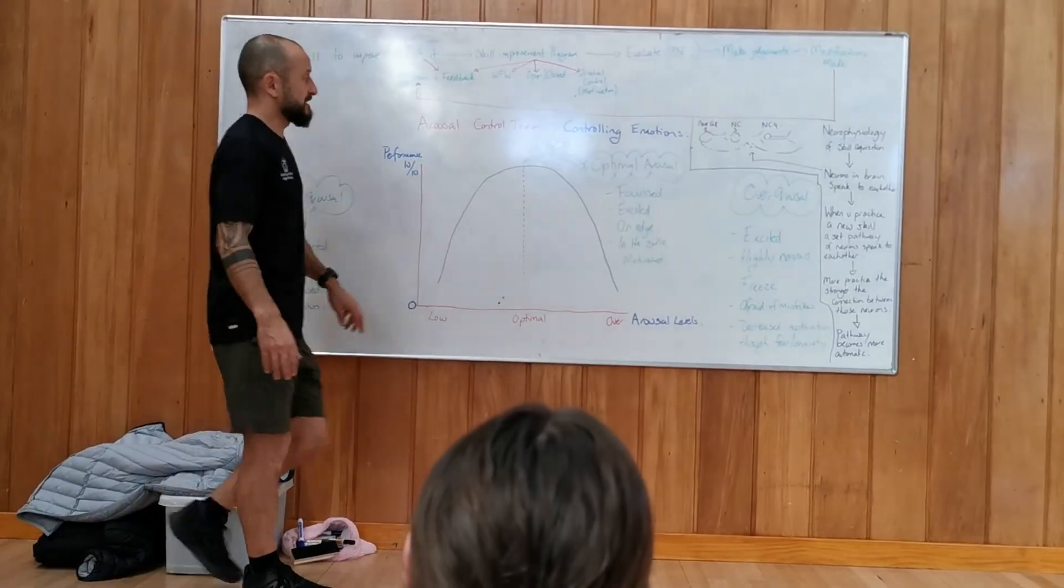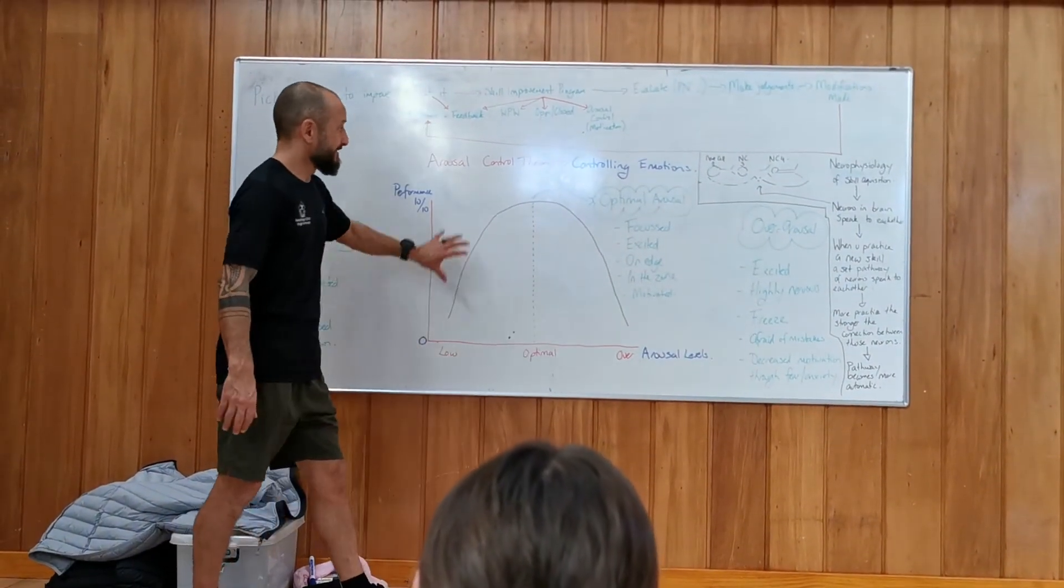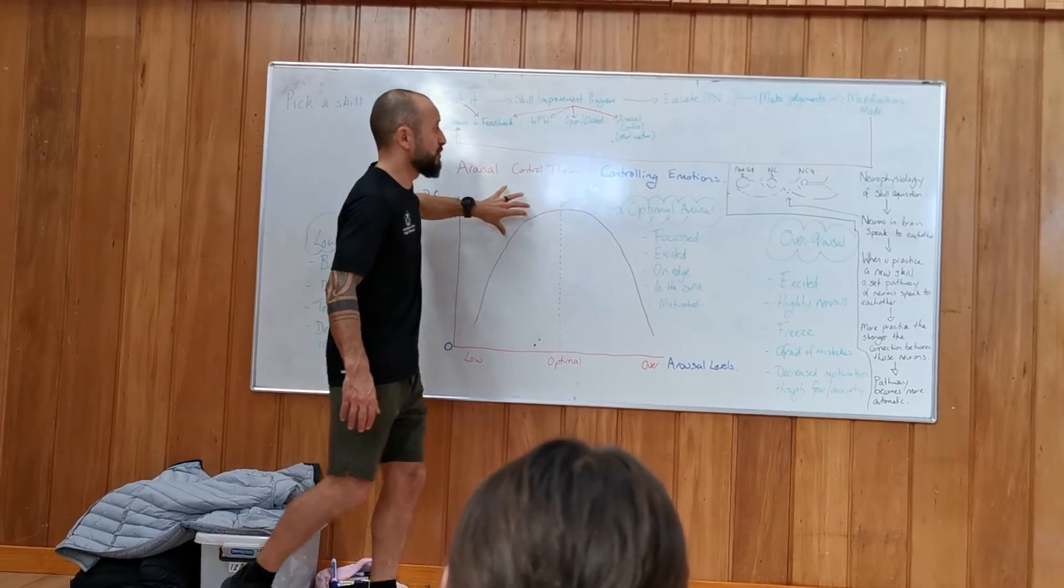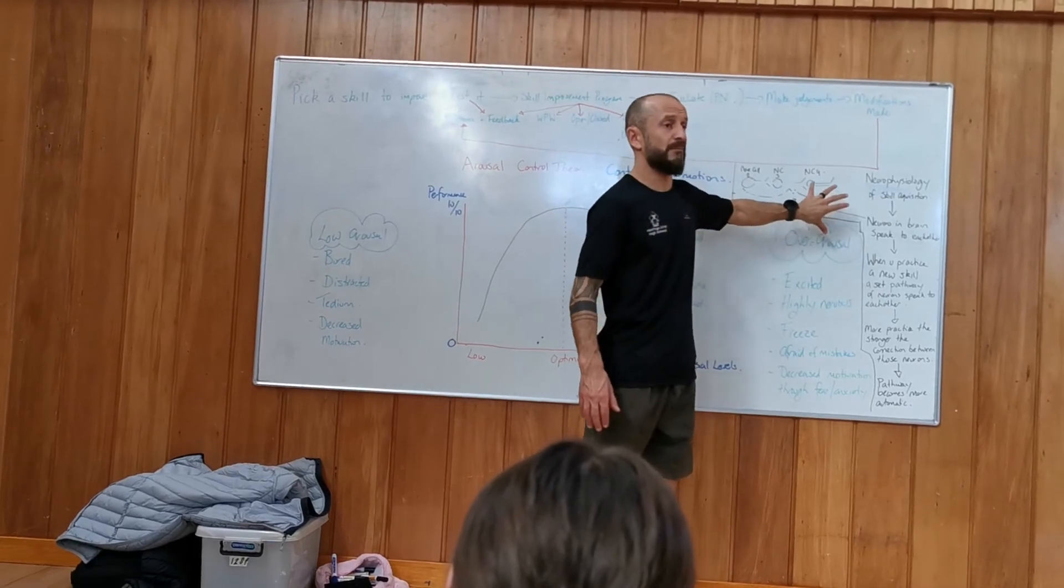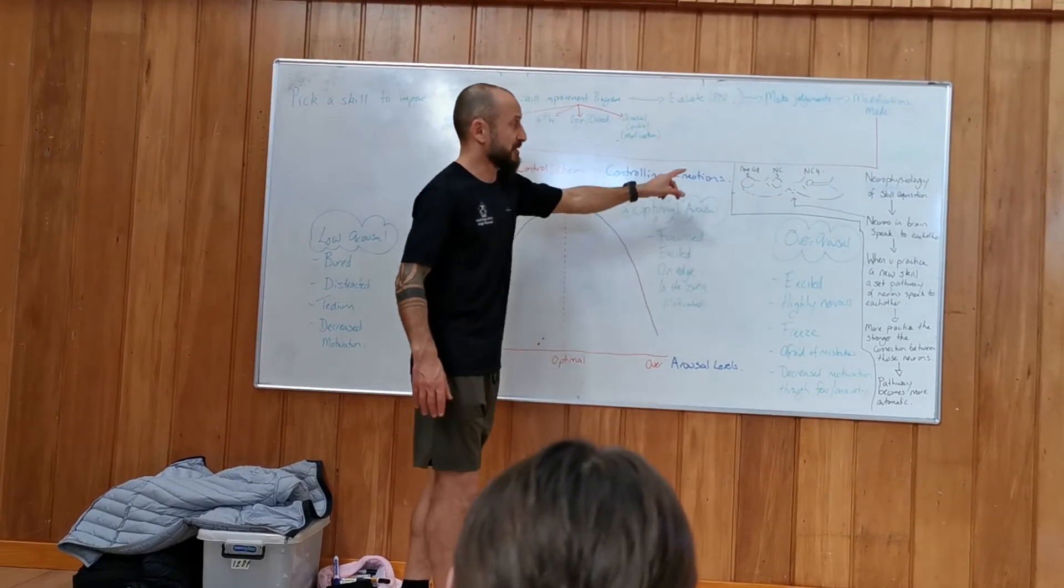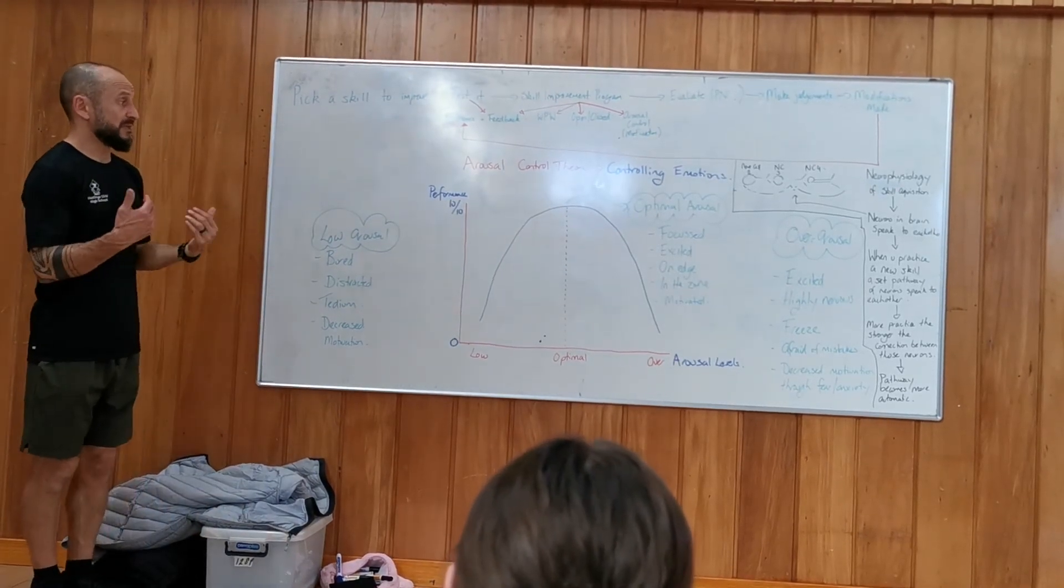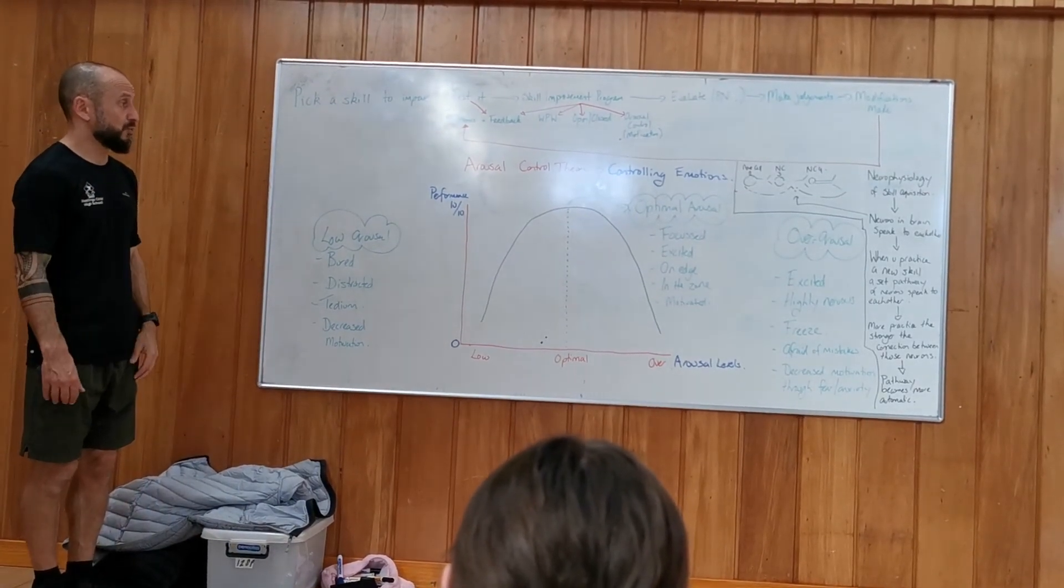So, that's the link between the theory of motivation or theory of arousal control and how and why it impacts your skill learning at a brain level. Now, if you can bring that into your writing to justify why you made the change. So, I made the change because we were bored.